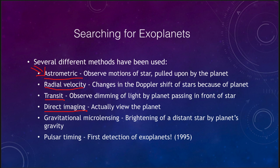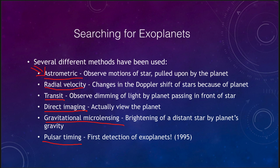A couple of less common methods: gravitational microlensing, when a planet passes directly in front of a distant star — not the one it's orbiting, but another star — causing it to temporarily brighten, which allows us to detect the planet. And finally, pulsar timing — variations in the timing of the pulsar can imply that there are planets orbiting it and tugging on it. This was actually the first detection of exoplanets back in the 1990s, the first detection of planets outside our solar system.